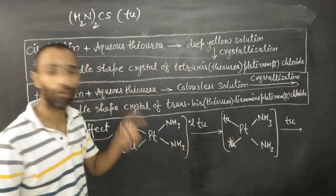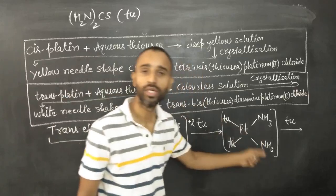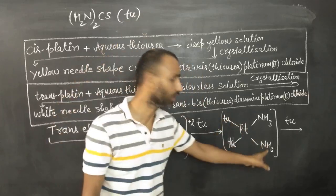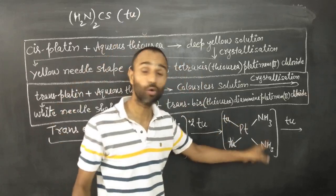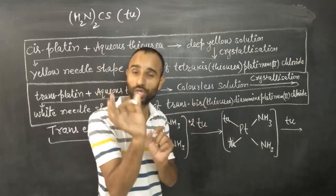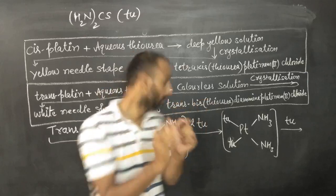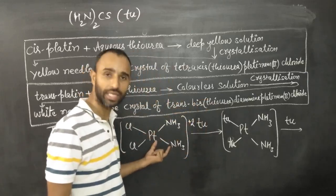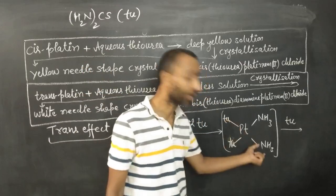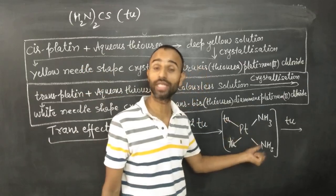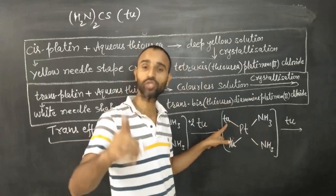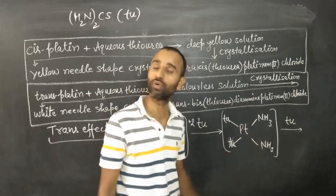Keep in mind, now when this is formed, you know, trans effect of thiourea is very, very greater than ammonia. And now it is not the case of bond strength because Pt-Cl bond is weaker than Pt-N bond, but here they are of almost equal strength. And now thiourea has very strong trans effect as compared to ammonia.